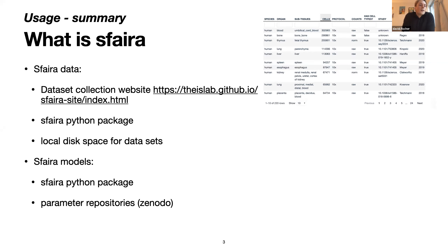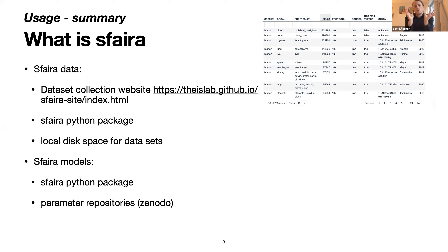On this website, you will see the data sets that we loaded in there. You can explore this a bit. There's a Sphira Python package which we host on the Tyslab GitHub repository, and which is also on PyPI. And then lastly, there's also this local disk space corresponding to Sphira, where essentially Sphira stores data sets, and we will discuss this later.